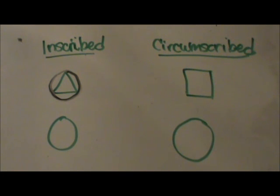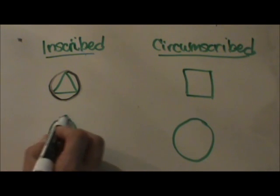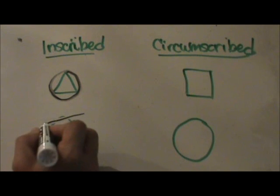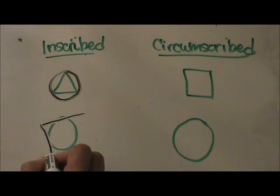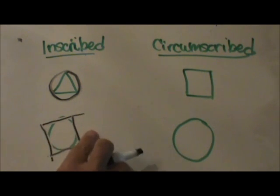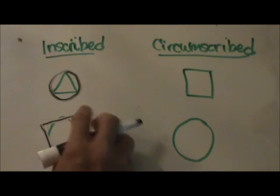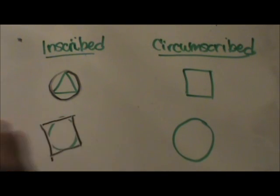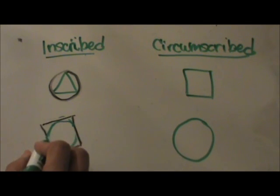What if the circle is inscribed in the polygon? That means it will be on the inside. Let me draw a quadrilateral but it could be any shape. I have a quadrilateral around the circle so we say the circle is inscribed in the polygon.